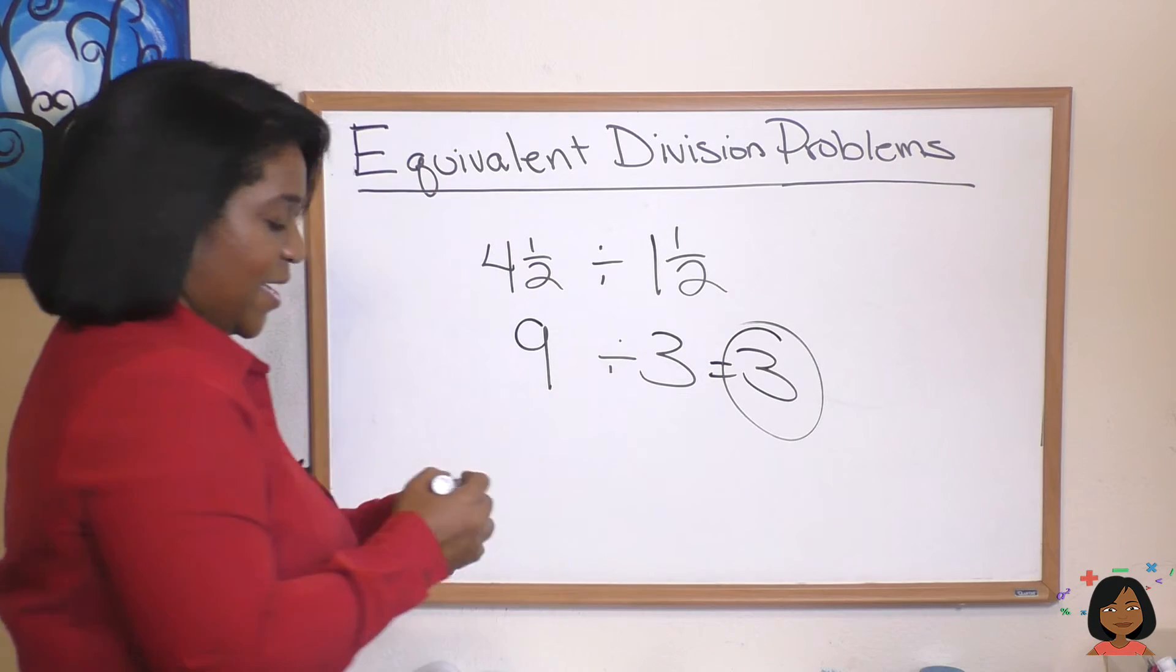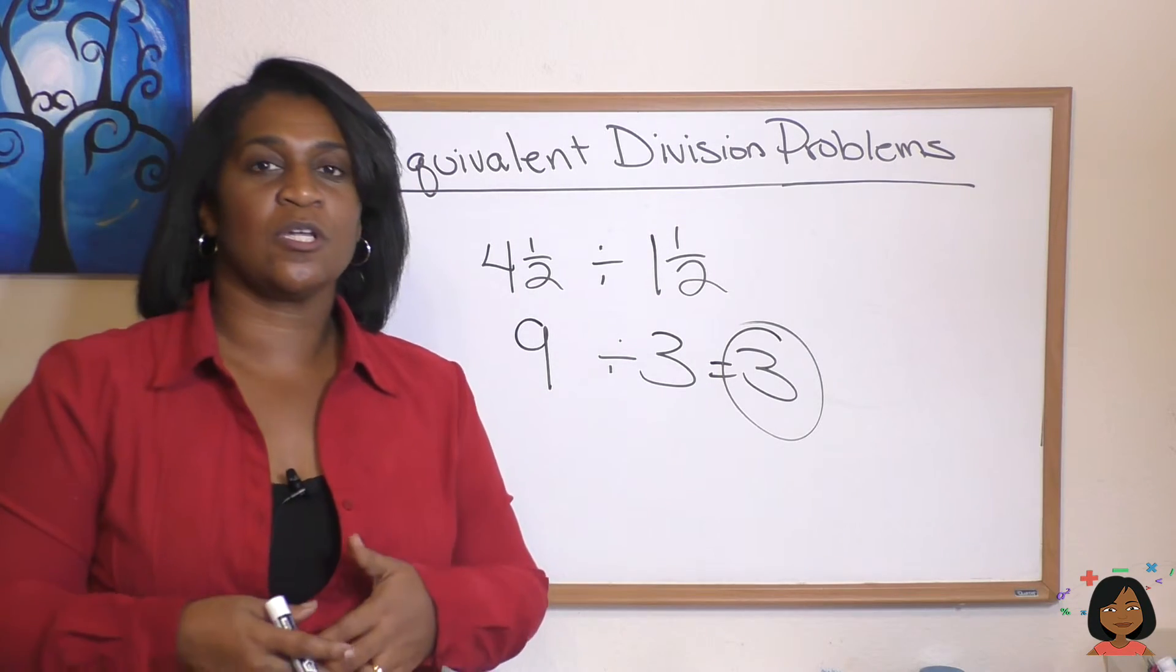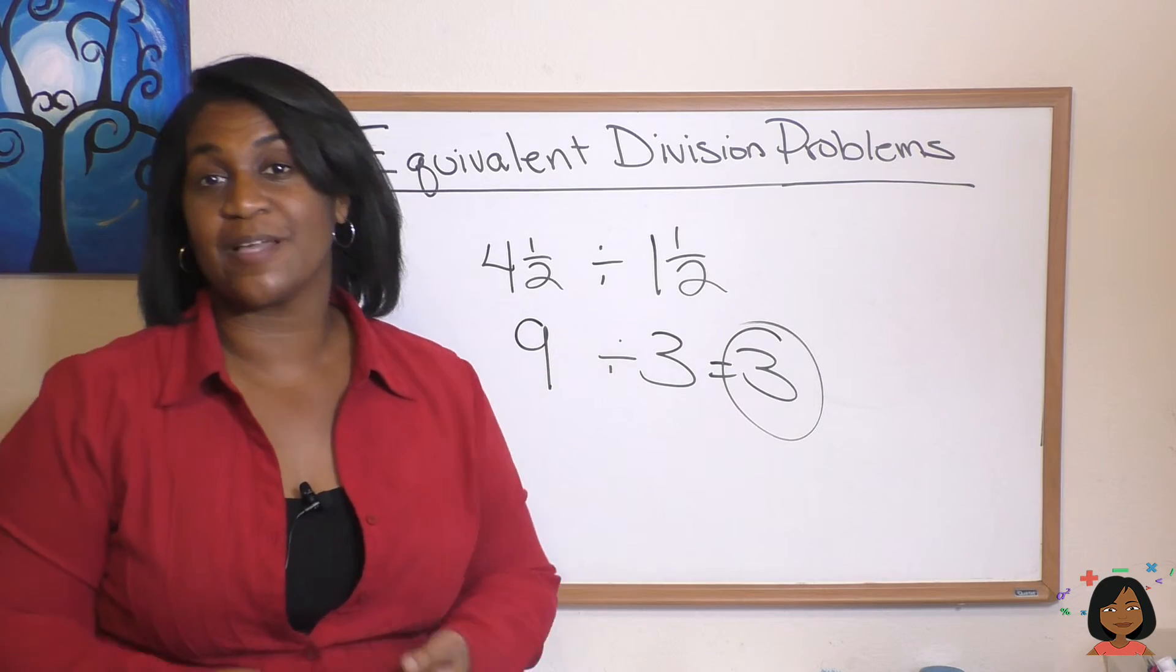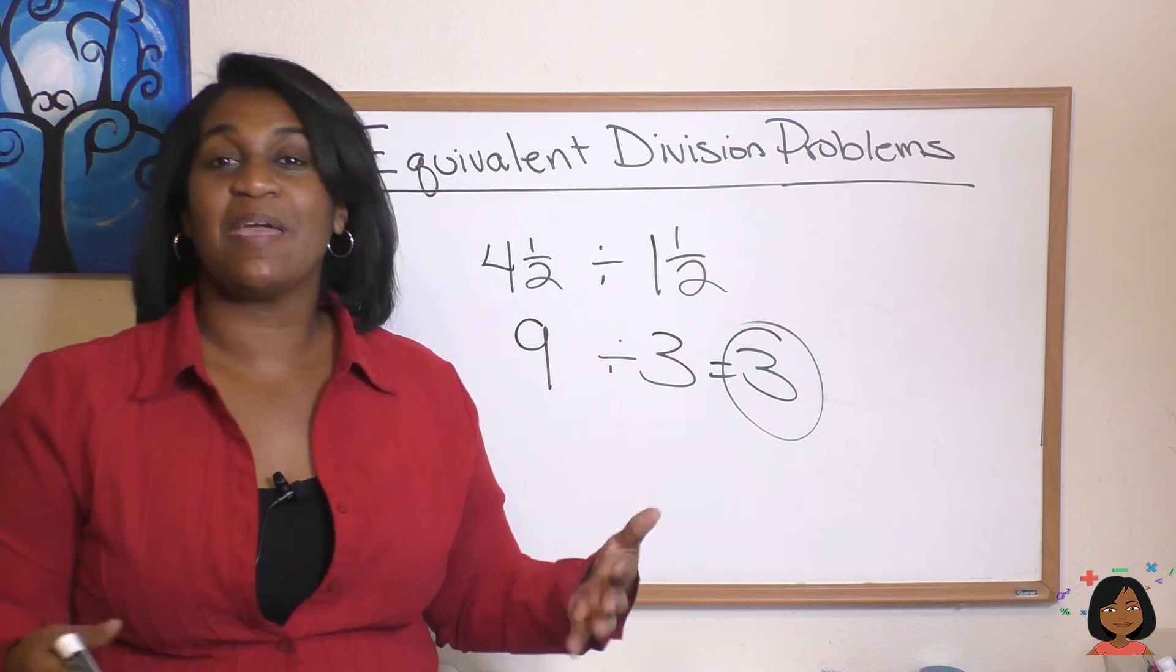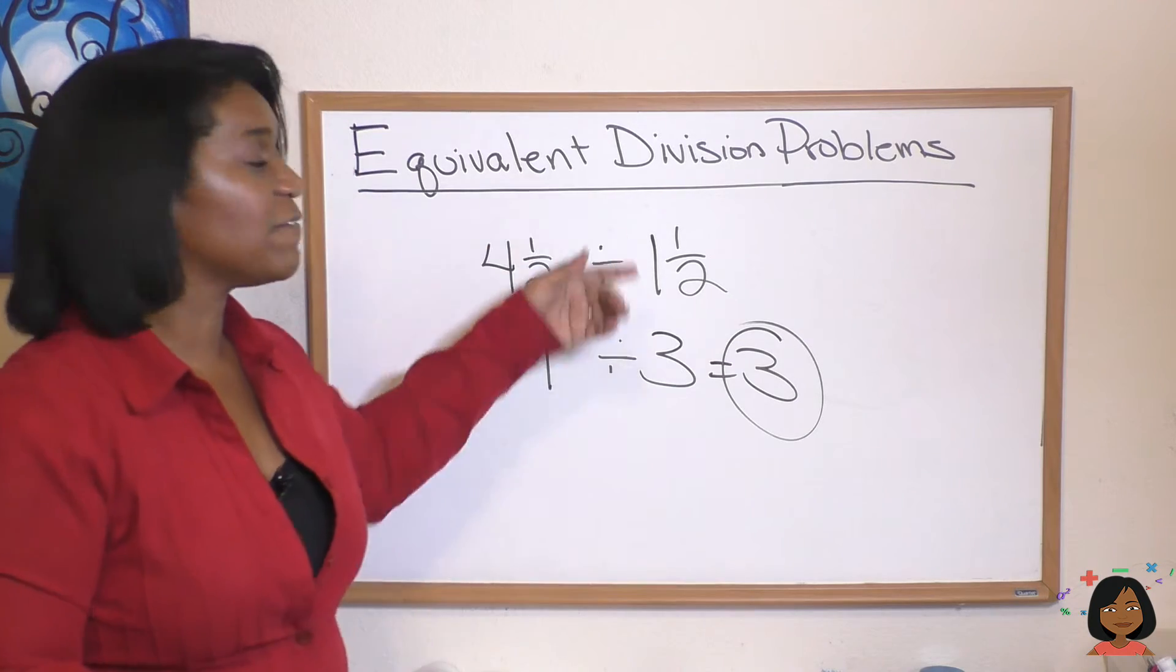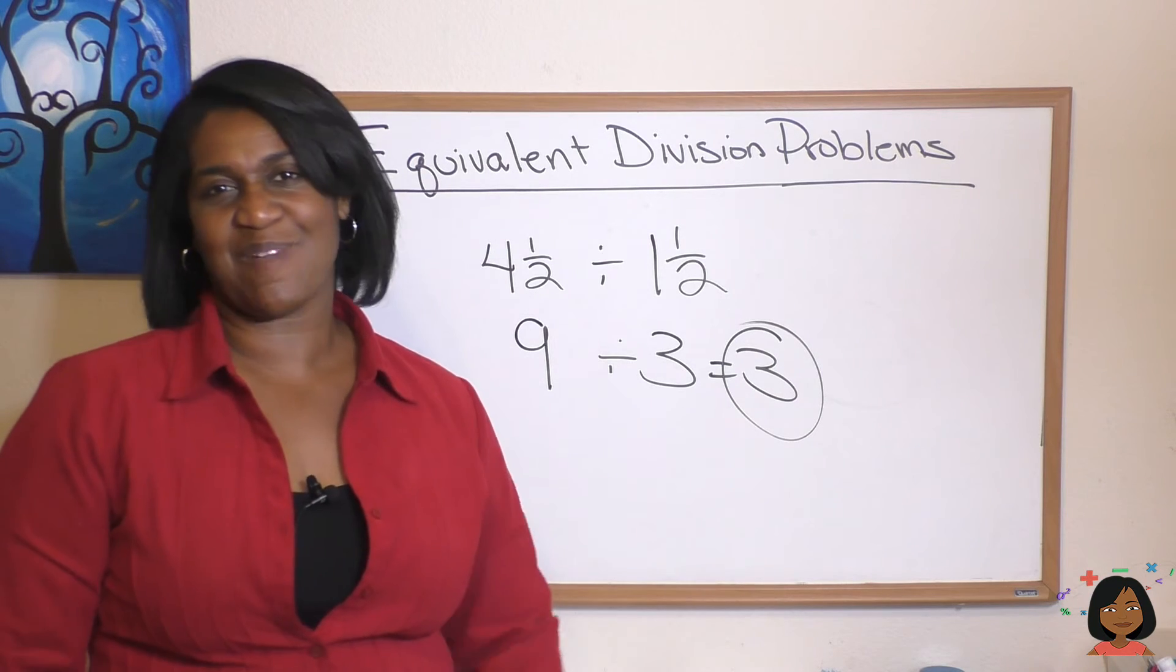So we're always just looking to see if you could multiply it by two, you could double it, you could half it. What could you do to make it easier? Again, since we're doing division, it's the same relationship. You're just trying to get easier numbers to do the math.